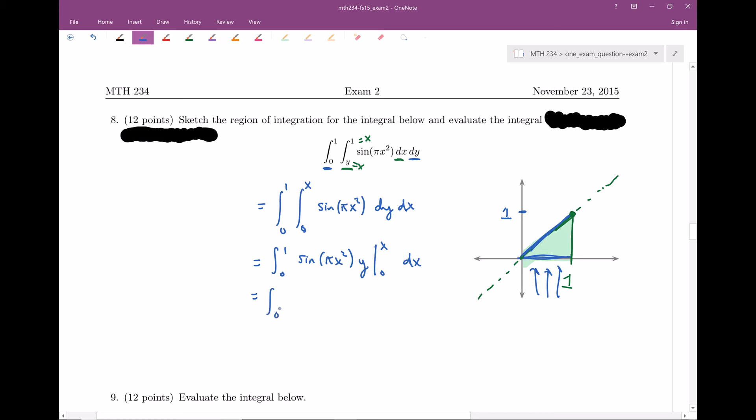So this is going to be sine of π x squared. And then this is going to be x minus 0 technically, dx. Of course, subtracting away 0 doesn't really do much. Now we can go ahead and evaluate this, and this extra x really comes along and saves the day.